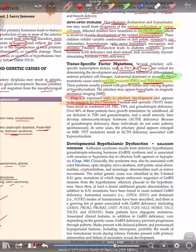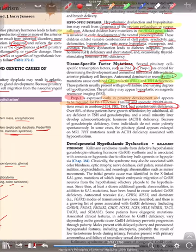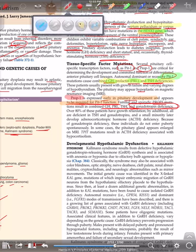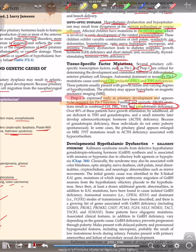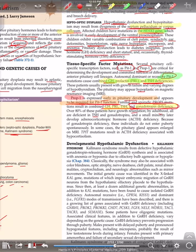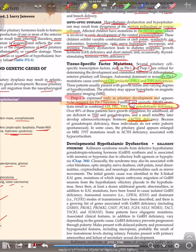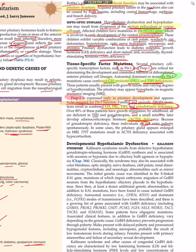Prop-1 is required for Pit-1 to function. Familial and sporadic Prop-1 mutations cause GH, prolactin, TSH deficiencies — the same as Pit-1 — plus additionally gonadotropin deficiency. Over 80% of these patients have growth retardation, and by adulthood all will be deficient in TSH and gonadotropins; a minority may later develop ACTH deficiency. Because of gonadotropin deficiency, these patients do not enter puberty spontaneously. In some cases the pituitary gland appears enlarged.